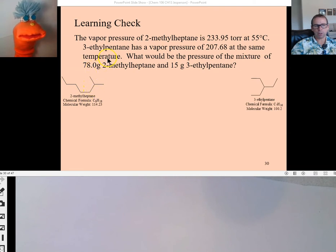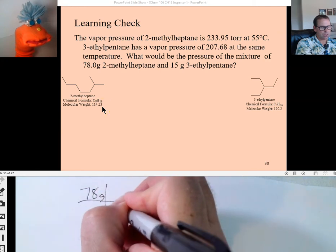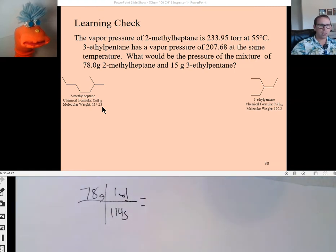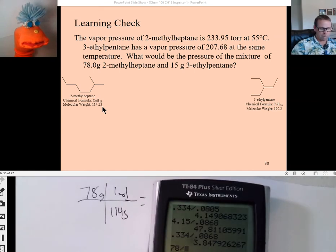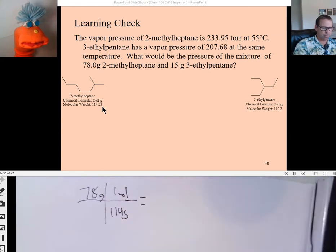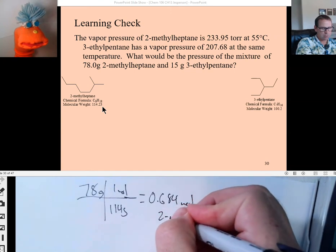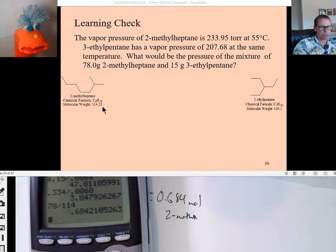Not really. Well, we know how many grams, right? Oh, yeah, I can divide, the molar mass is right there, so 78 divided by 114. 78 grams, 114 grams for every one mole, right? That'll tell me how many moles there are of that material, right? And 0.684 moles of my 2-methyl material. All right, and then the other one? 15 divided by 100.2. Very good.